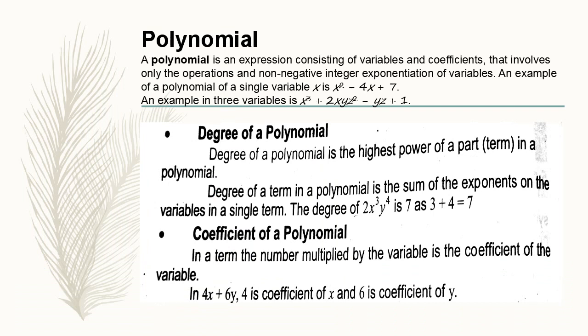Next, coefficient of a polynomial. In a term, the number multiplied by the variable is the coefficient of the variable. In 4x plus 6y, 4 is the coefficient of x and 6 is the coefficient of y. As we can see in the previous slide that a and b are the literals but here we use the numbers which are the coefficients.